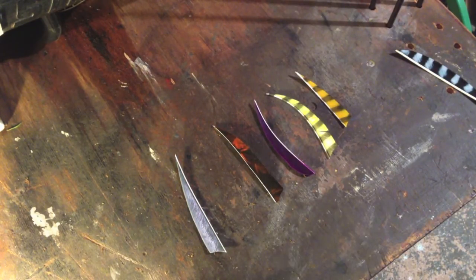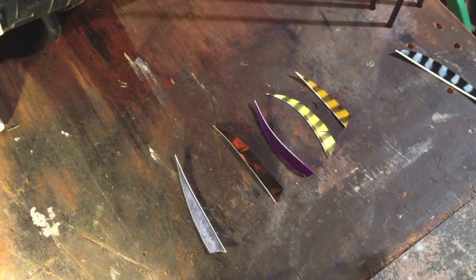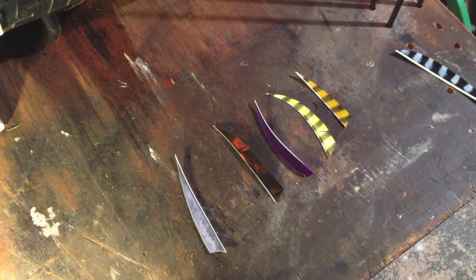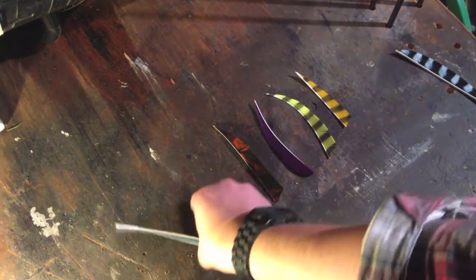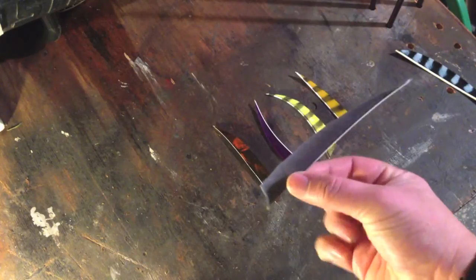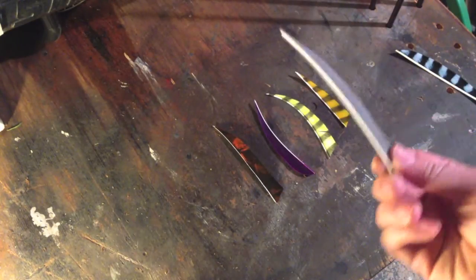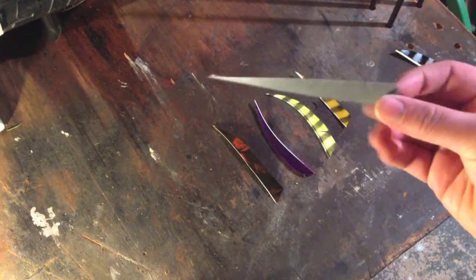When you buy feathers from the shop or online it should say whether they're left or right. But if you somehow find yourself with some feathers and you don't know what to do, hopefully this will help you. Let's start with this one. This here is a grey 5 and a half inch shield cut feather.